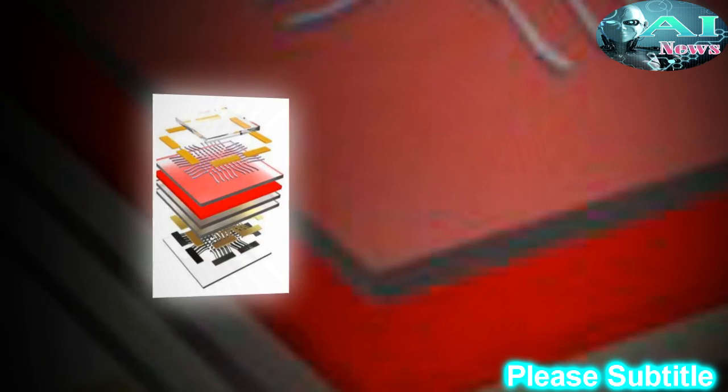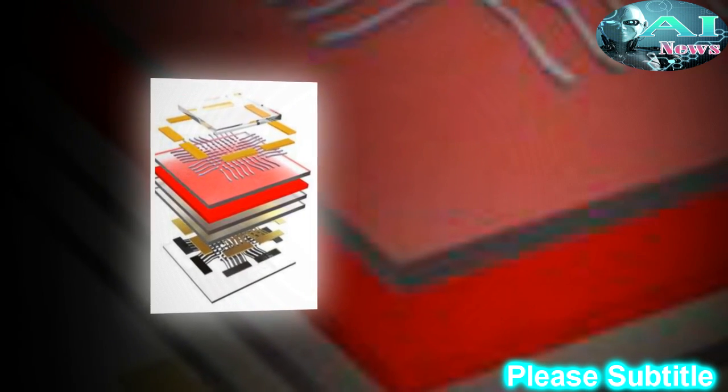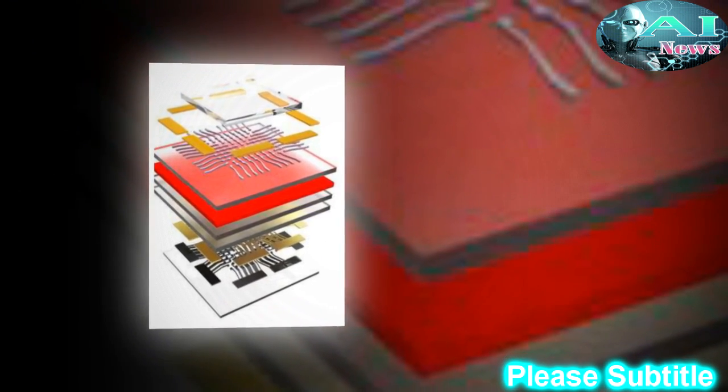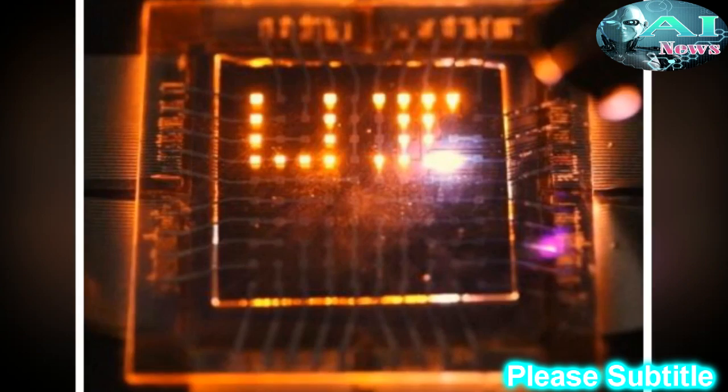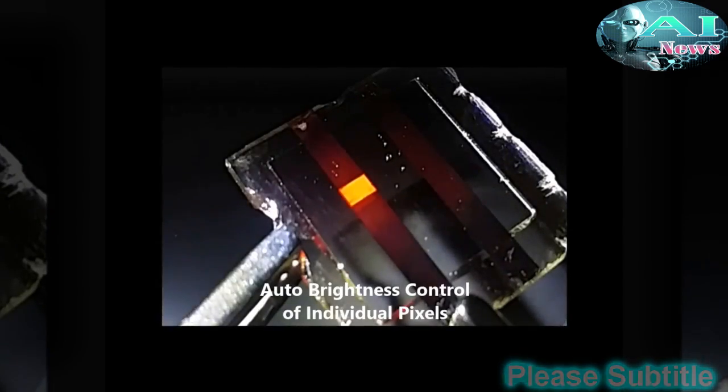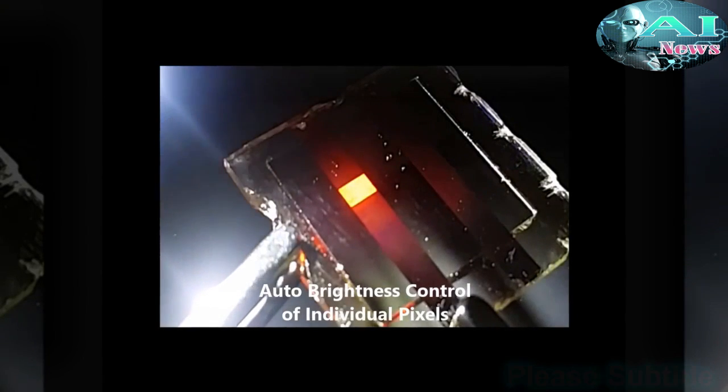The researchers did all their demonstrations with arrays of red LEDs. They are now working on methods to pattern three-color displays with red, blue and green pixels, as well as working on ways to boost the light harvesting capabilities by adjusting the composition of the nanorods.